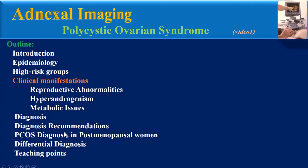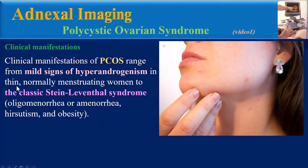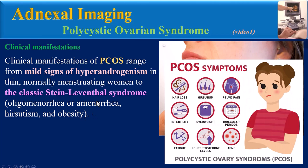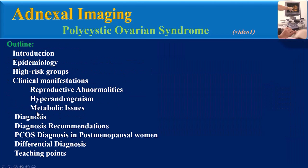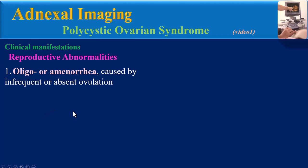Because PCOS diagnosis largely depends on clinical symptoms, familiarity with these symptoms is essential. Clinical manifestations of PCOS range from mild signs of hyperandrogenism in thin, normal-menstruating women to the classic Stein-Leventhal syndrome with oligomenorrhea or amenorrhea, hirsutism, and obesity.